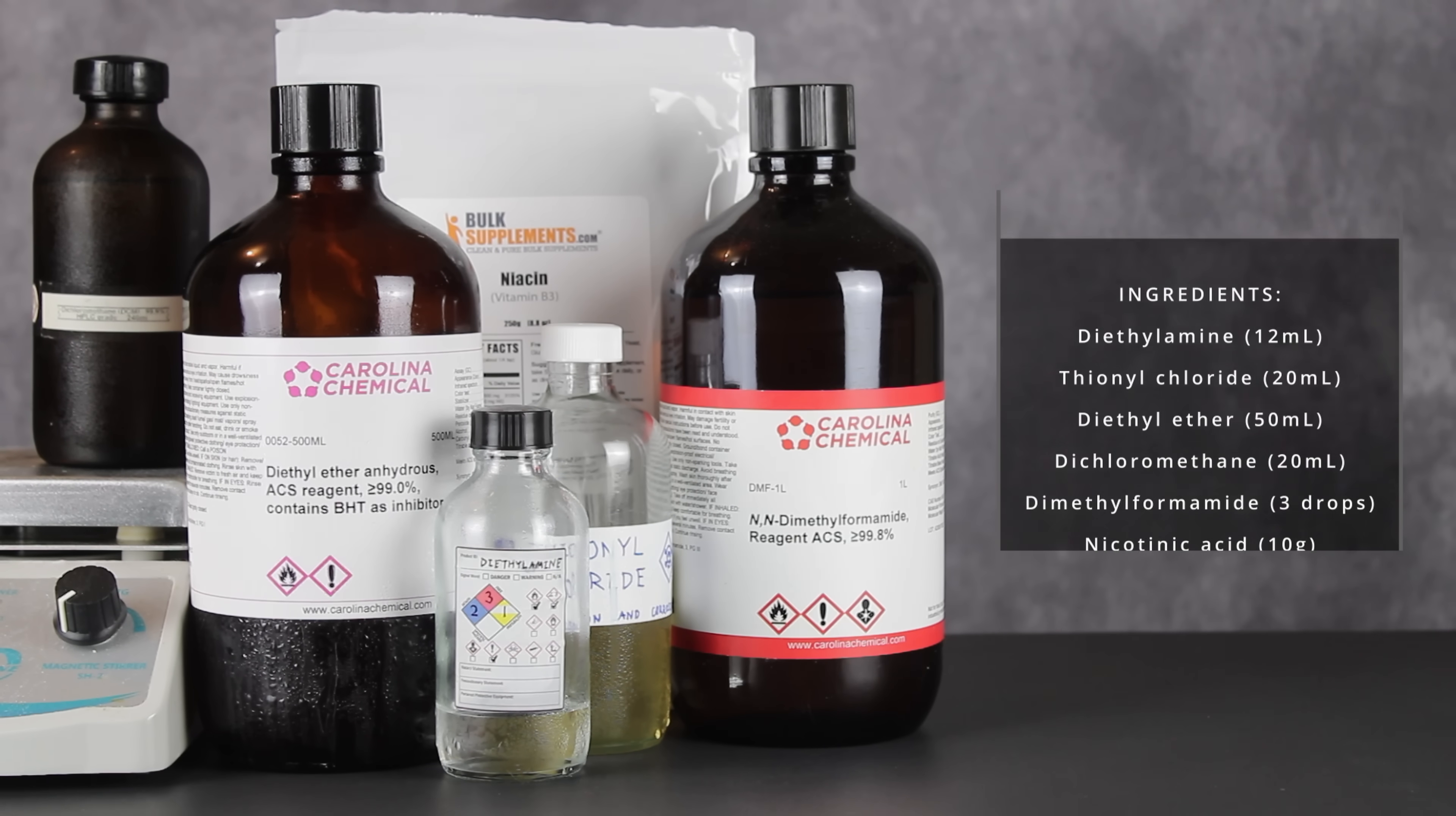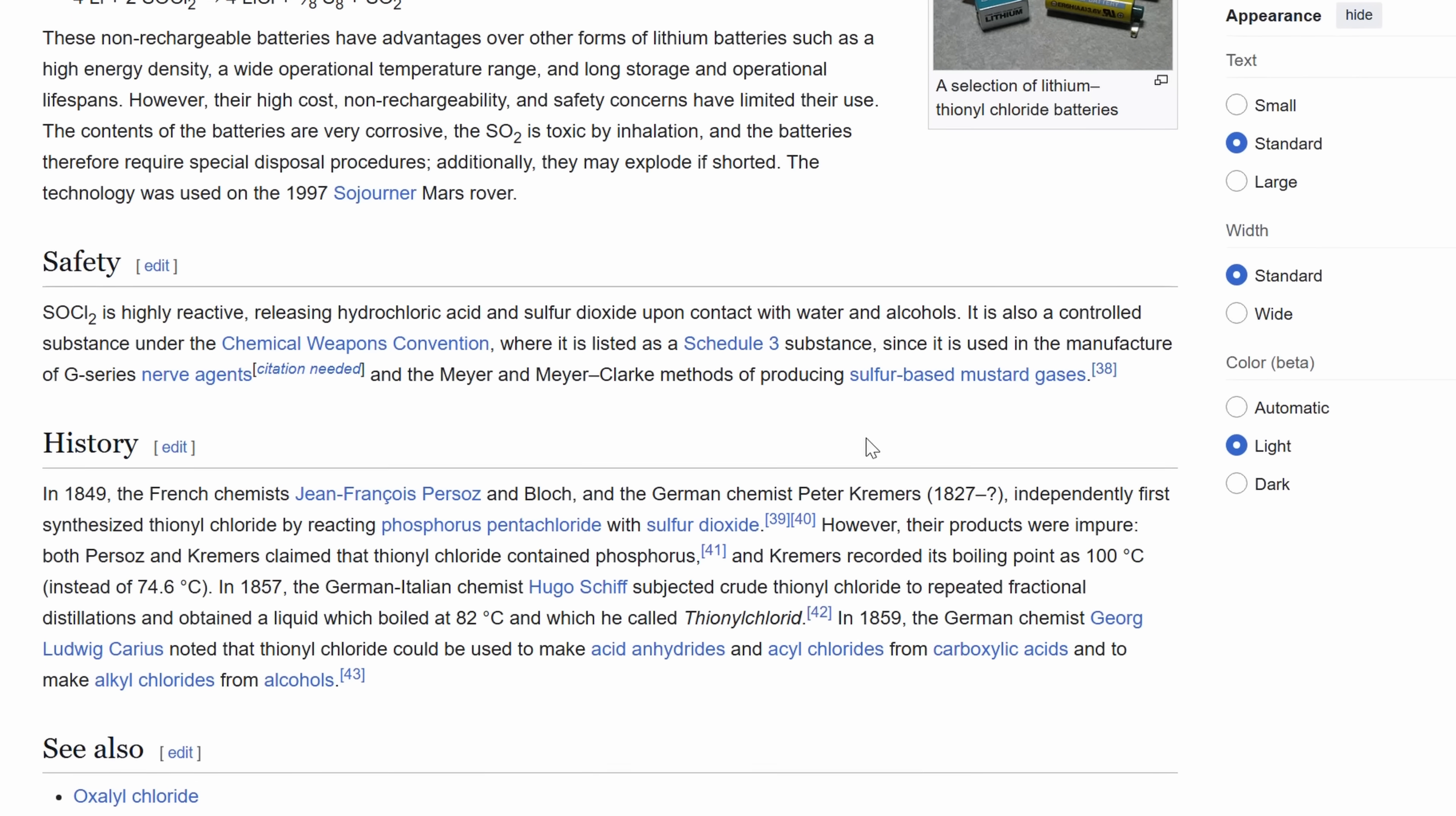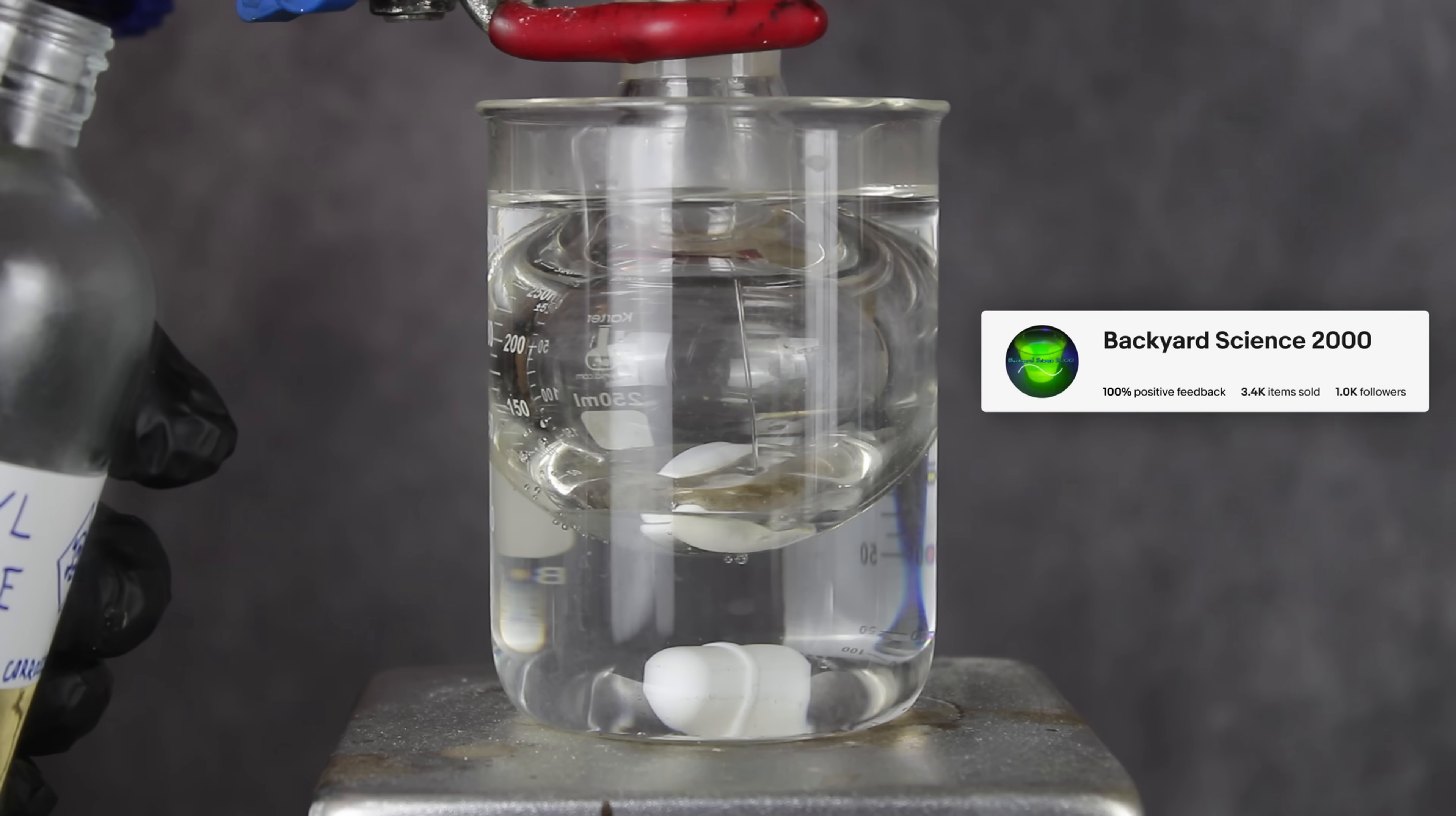To make nikethamide, I ended up going with the following reagents: diethylamine, thionyl chloride, diethyl ether, dichloromethane, dimethylformamide, and nicotinic acid, otherwise known as niacin or vitamin B3. Most of these are pretty standard reagents, but thionyl chloride can be a bit tricky to source, since it's kind of a major precursor to a lot of banned drugs and chemical weapons. Still, it's legal to own, and I was able to get some from an old friend of the channel, Backyard Science 2000, on eBay.